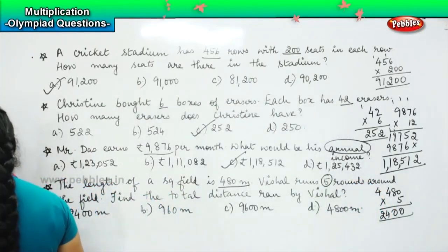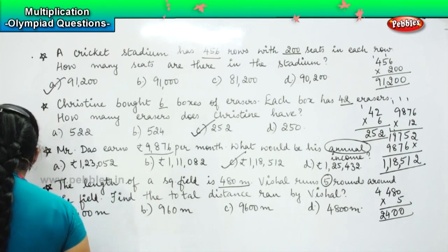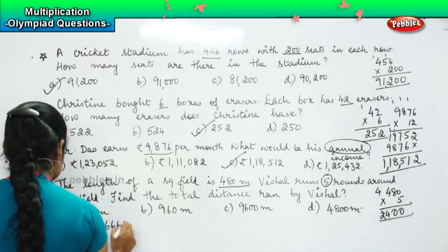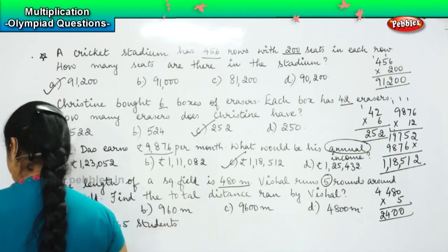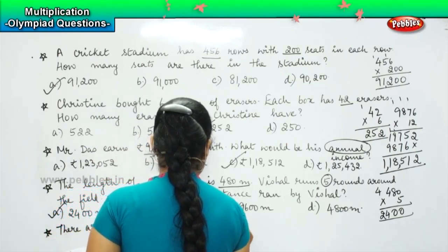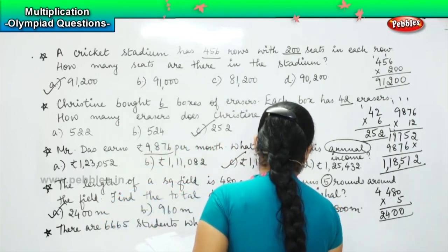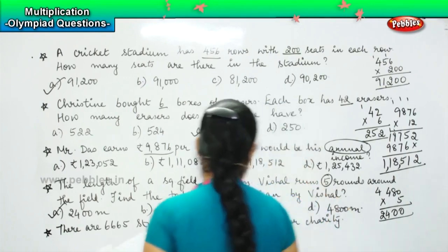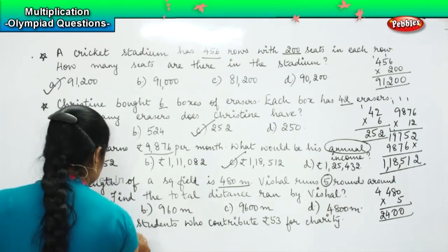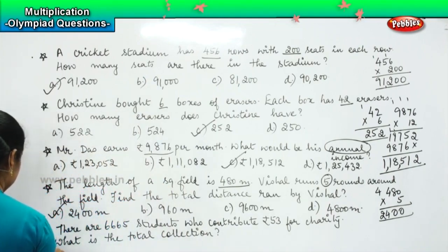So the last question for this chapter. Are you all ready? Here is your question. The question says: there are 6665 students who contribute rupee 53 for charity. What is the total collection?